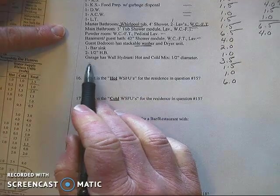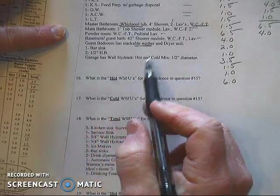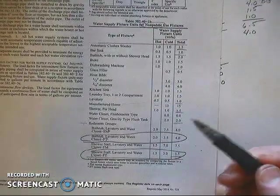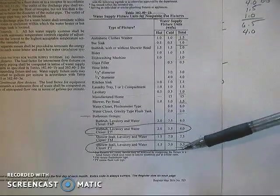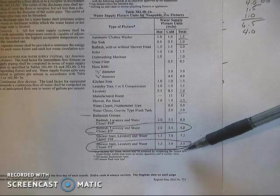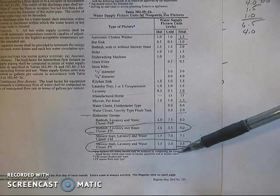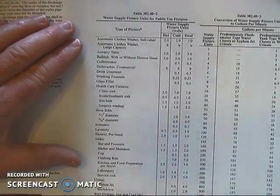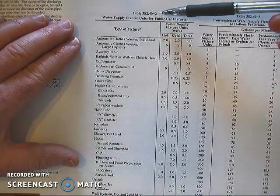And then the last thing that they've got on here is a garage that has a wall hydrant and that wall hydrant has hot and cold and it's half inch in diameter. Now you'll notice on this table, it really doesn't have anything that fits that. But at the bottom, there's a footnote. It says for fixtures not listed, factors may be assumed by comparing the fixture to a listed fixture which uses water in similar quantities and similar rates. Well, what we can do is we can actually look at the next table, which is 38240 table two.